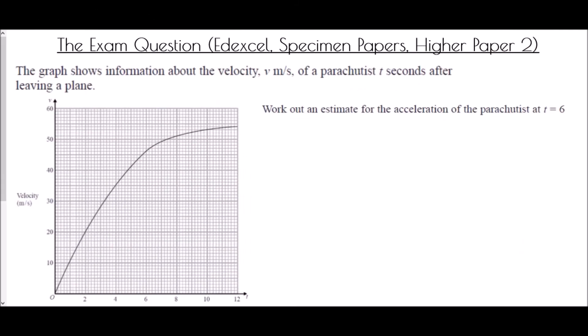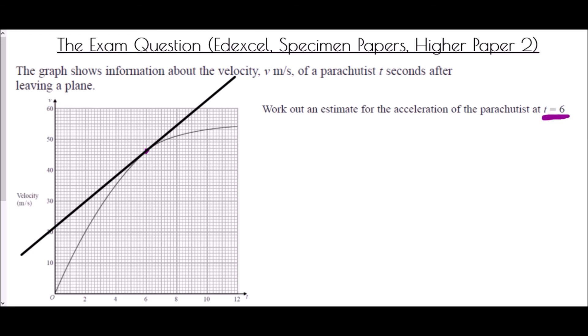Now we look at the exam question from the NXCL specimen papers, higher paper two. The graph shows the velocity in meters per second of a parachutist t seconds after leaving a plane, and asks us to estimate the acceleration at t equals six. This is an instantaneous rate of change. We read up from six and mark that point on the graph. To find an estimate, we draw a tangent line touching that point and create a triangle as large as possible.